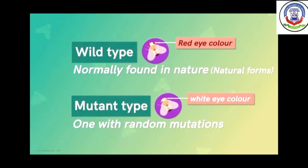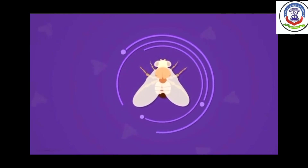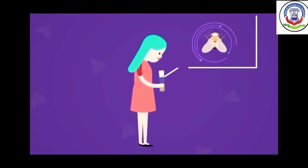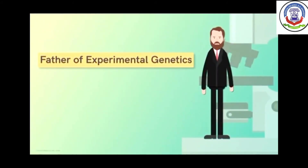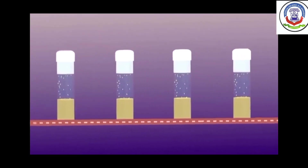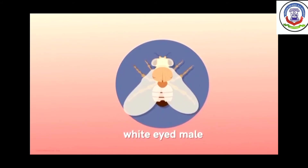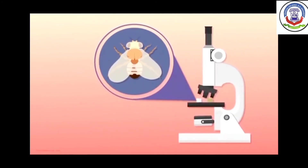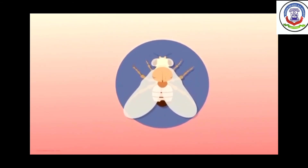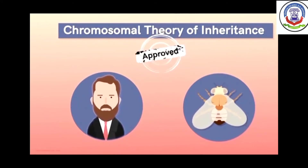Morgan soon began experimenting with this unique mutant white-eyed male fruit fly, understanding that it would lead to new discoveries in genetics. He began understanding how these famous experiments on fruit flies would later prove the chromosomal theory of inheritance further. Morgan crossed the white-eyed male with a wild type, i.e. a red-eyed female.